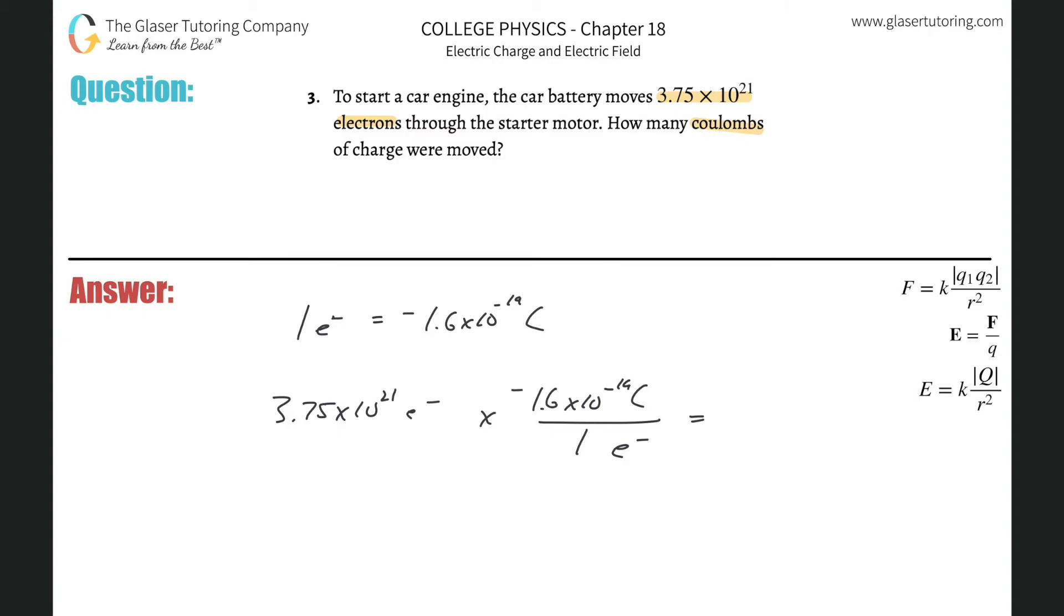If you plug in the negative, you'll get a negative electron value—what does that even mean? So just disregard it. So 3.75 times 10 to the 21 multiplied by 1.6 times 10 to the negative 19 gives us 600 coulombs of charge moved through the engine.